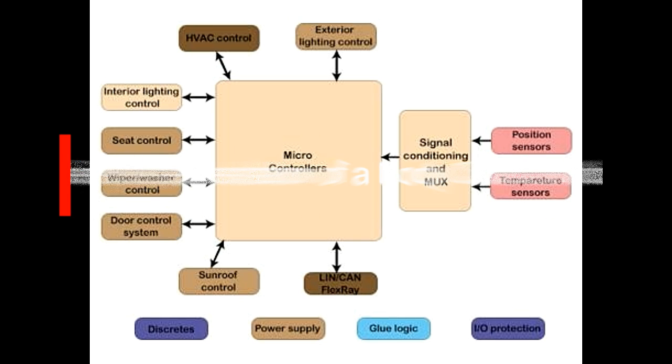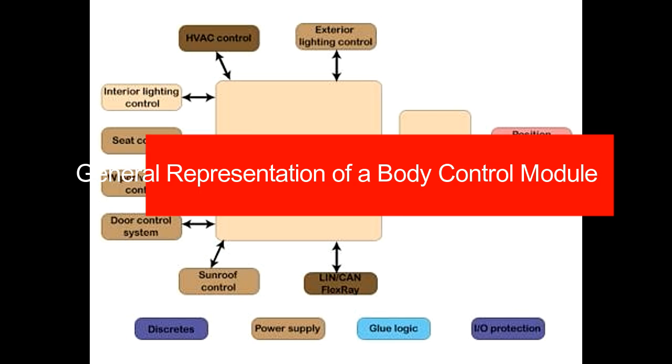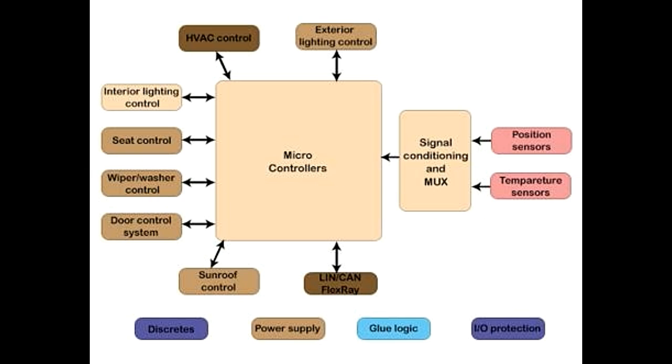The block diagram above gives a general representation of this. The input devices feed the data to the control module. The devices that can be input to this module are sensors, variable reactors, etc.